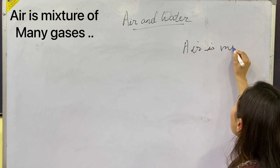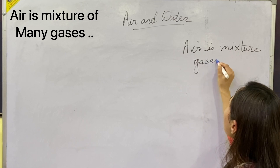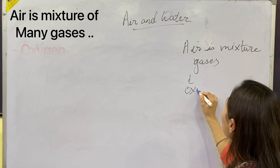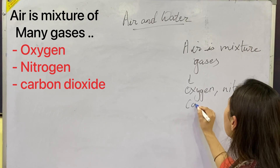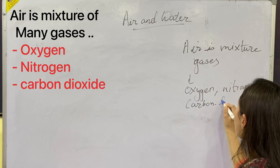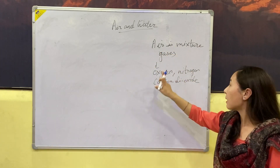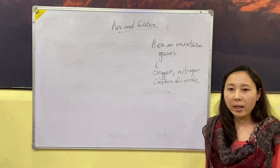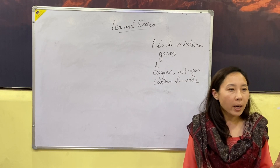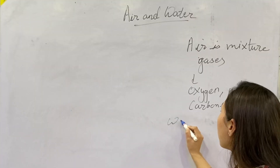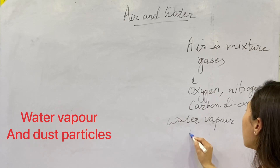Air is a mixture of many gases — like oxygen, nitrogen, and carbon dioxide. Air also contains water vapor and dust particles.